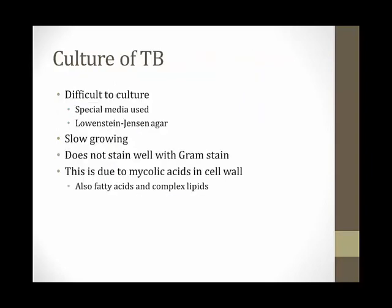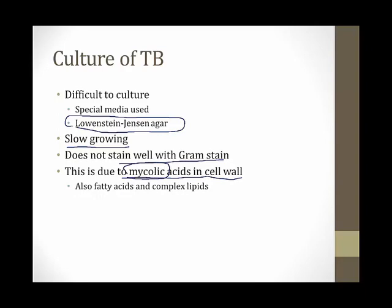Tuberculosis is very difficult to culture. Most traditional media used for other bacteria don't work, so you need special media. The one most labs use is called Lowenstein-Jensen Agar, or LJ Media for short. Even with this, it still takes a long time — one to eight weeks — to determine whether tuberculosis is present in a sputum sample. TB also doesn't stain well with the Gram stain because it has mycolic acids in the cell wall, which is what makes it a mycobacterium. There are also fatty acids and complex lipids in the cell wall.